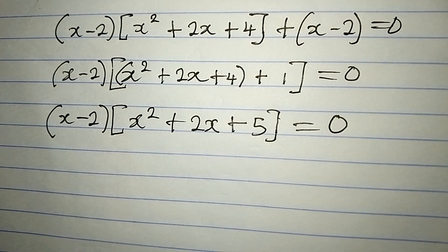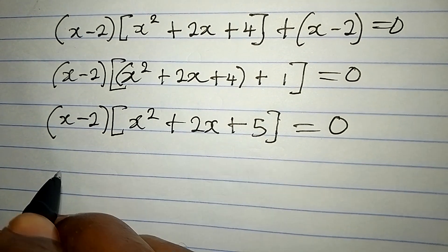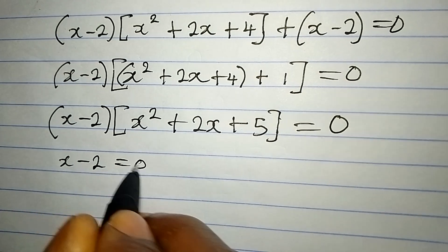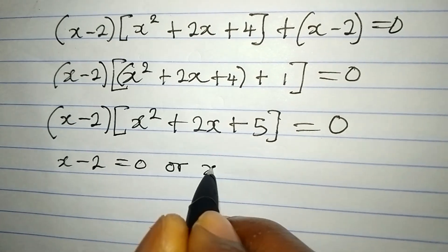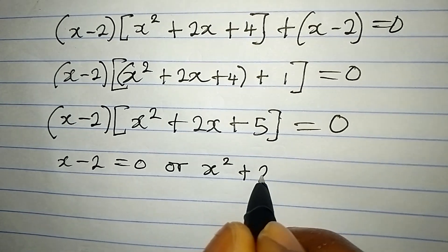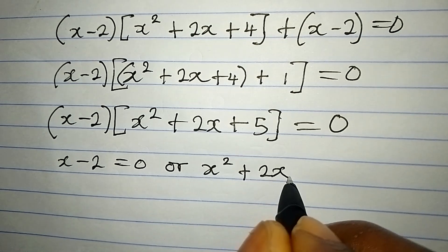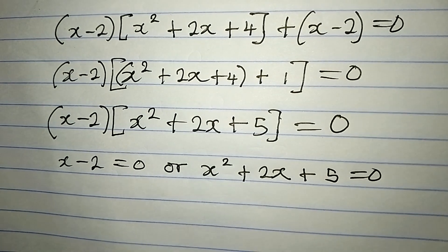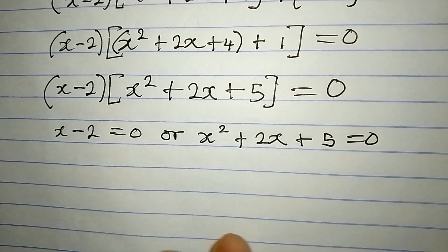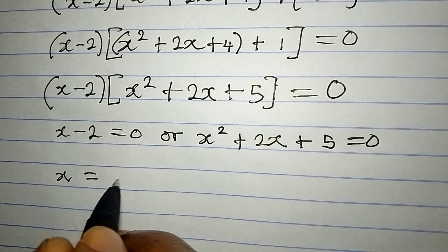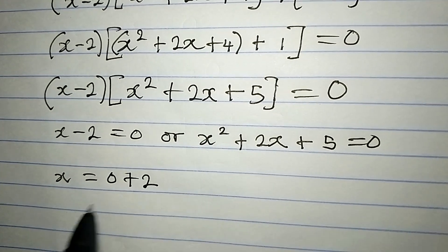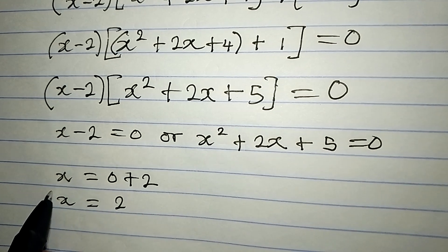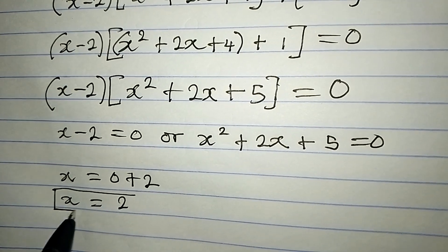We can now apply the zero product rule, meaning it is either x minus 2 equals 0, or x² + 2x + 5 equals 0. From the first factor, x equals 0 plus 2, so x equals 2. This is the first solution.